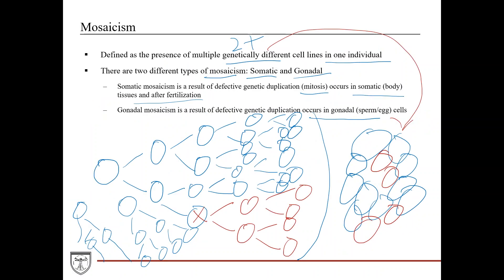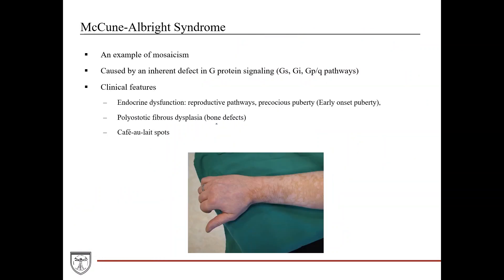McCune-Albright syndrome is a classic example of mosaicism. It's caused by an inherent defect in G-protein signaling — specifically a mutation in the G-alpha protein. These patients need to be a mosaic in order to survive; if the mutation occurs before fertilization it's universally fatal, because you need that normal population of cells. So you have two genotypes: one with the mutation and one that's normal, and the normal cells help them survive.